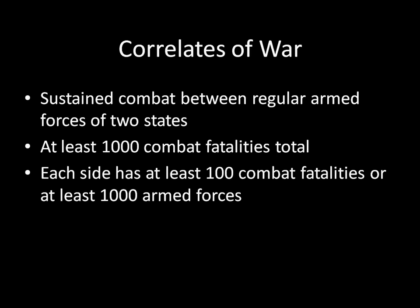So those are your correlates of war rules. While you might have some issues with this — for example, a conflict with 999 combat fatalities would not count as a war, but if one extra person had died it suddenly would — I understand you might have some problems with this. Nevertheless, if we use these rules and definitions, we can look at some graphs and find some very interesting trends in war over time.